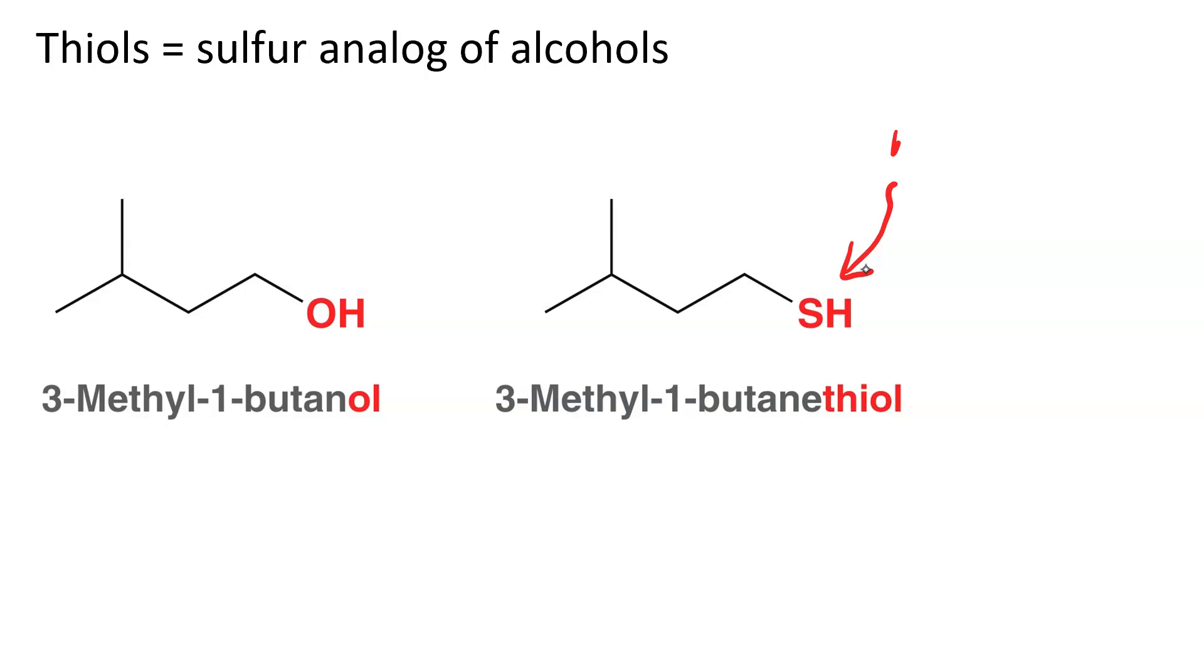You can also call the SH group a mercapto group because they like to bind to mercury. So this compound on the right you could also call 1-mercapto-3-methyl-butane.